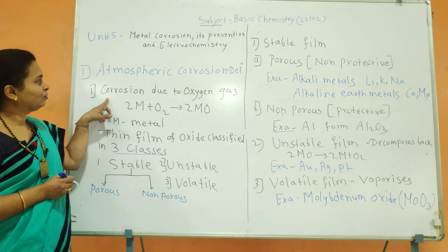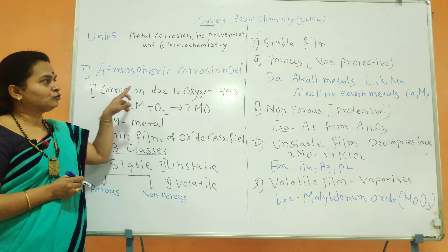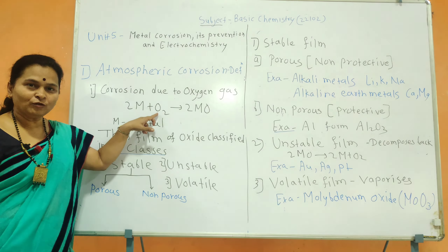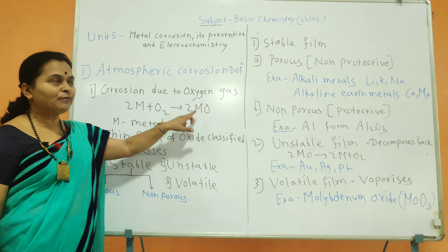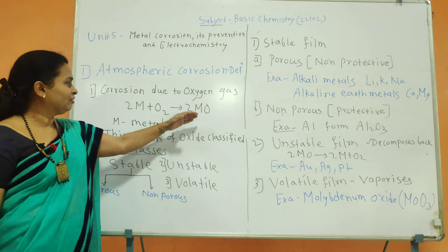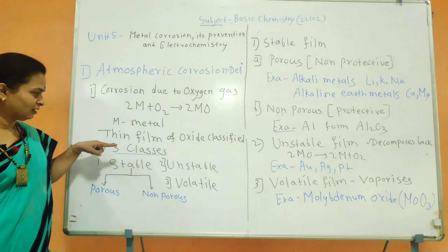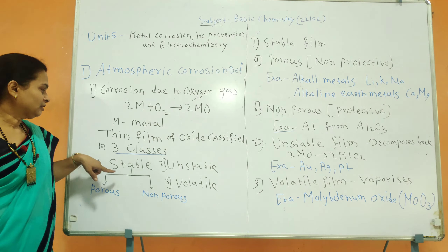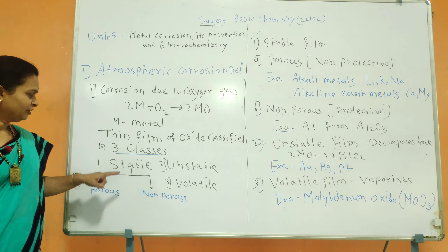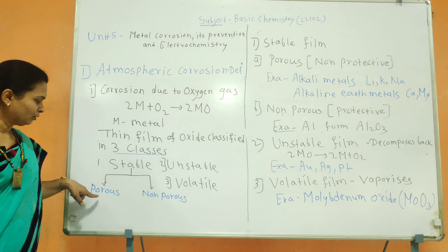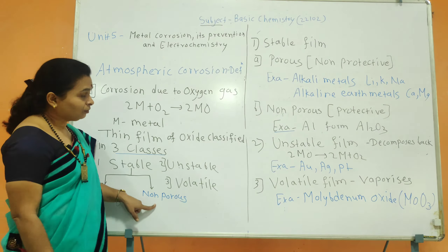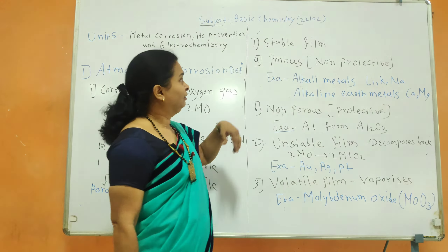The first type of atmospheric corrosion is corrosion due to oxygen gas. When a metal comes in contact with oxygen gas, there is formation of a metal oxide film. This metal oxide film is divided into three classes: stable, unstable, and volatile film. The stable film is further divided into two classes: porous film and non-porous film.